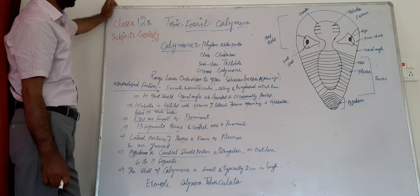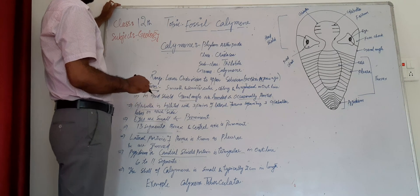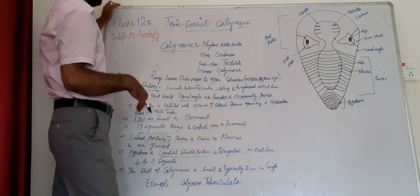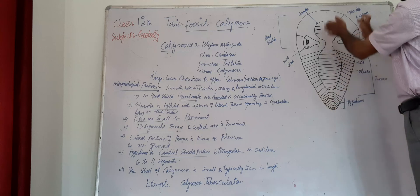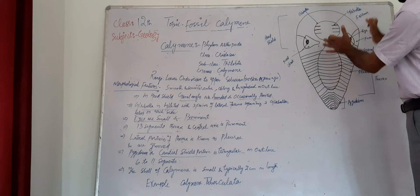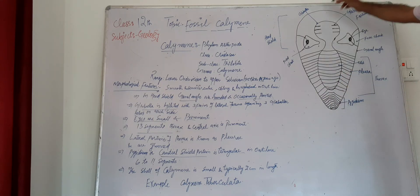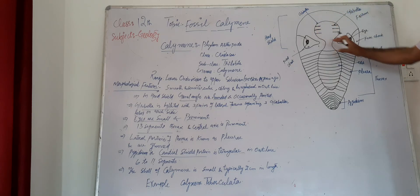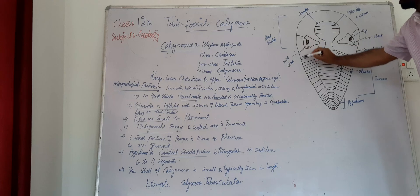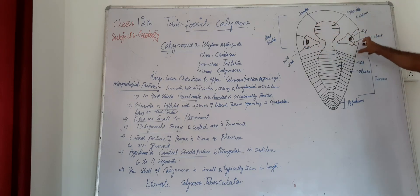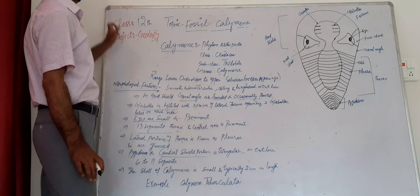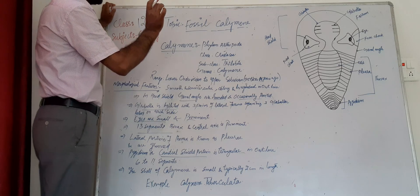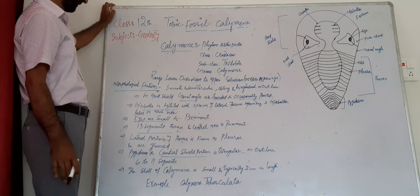When we look at the morphological features of the Calymene fossil, it is smooth and semi-circular on one side, and oblong — meaning elongated — on the other. It has a stretched body with a longitudinal outline. The head shield and the genial angles are rounded, and occasionally in some Calymene fossils the genial angles are pointed.